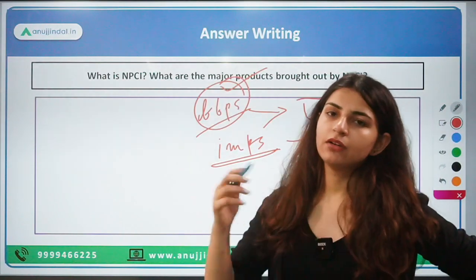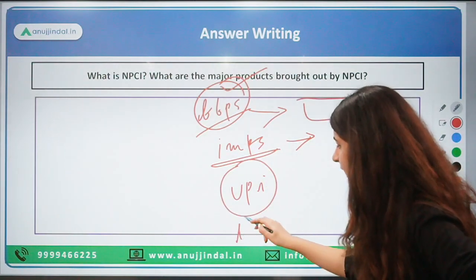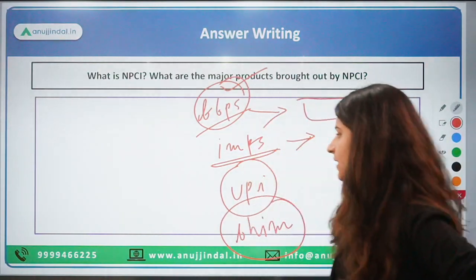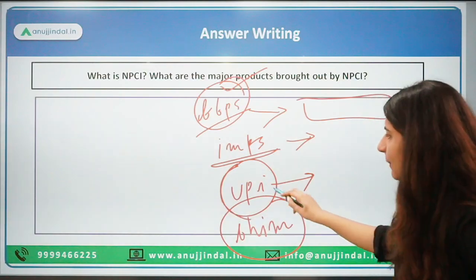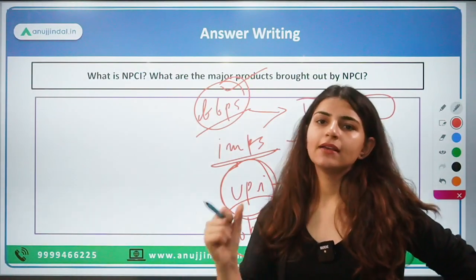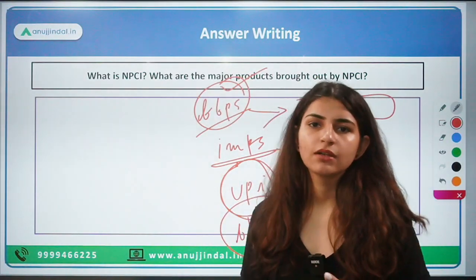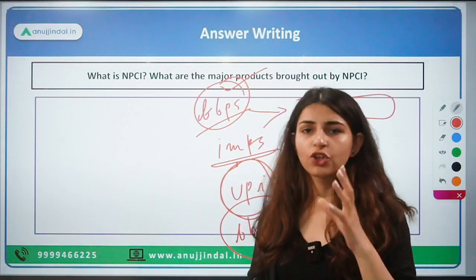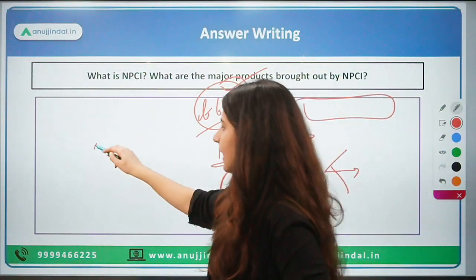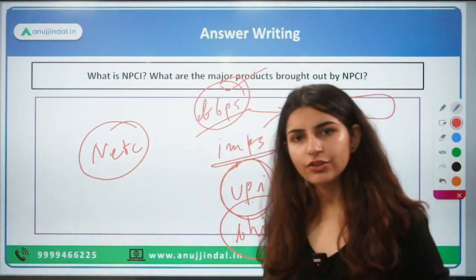Then BHIM — Bharat Interface for Money — it is an app using which UPI transactions can take place; it was a government app. Then UPI — Unified Payment Interface — wherein you can make real-time interbank transactions from your mobile app using somebody's mobile number, virtual payment ID, or even a QR code. You can also write about UPI 1-2-3 and UPI Lite here.